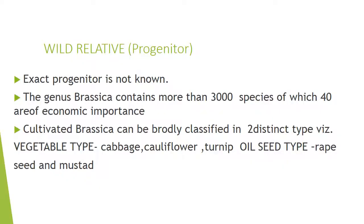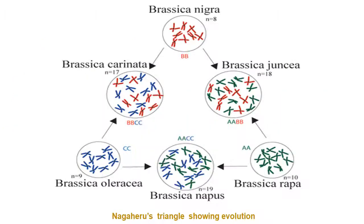Coming to wild relatives of mustard: the exact progenitor is not known. The genus Brassica contains more than 3,000 species with 40 of economic importance. This is the U-Triangle of Brassica, where Brassica nigra, oleracea, and rapa with basic chromosome numbers 8, 9, and 10 are diploid types. When they are crossed, the middle of the triangle shows Brassica carinata, napus, and juncea with chromosome numbers 34, 38, and 36 respectively.